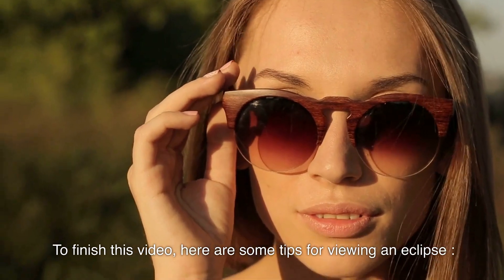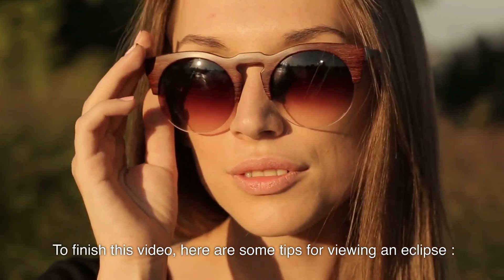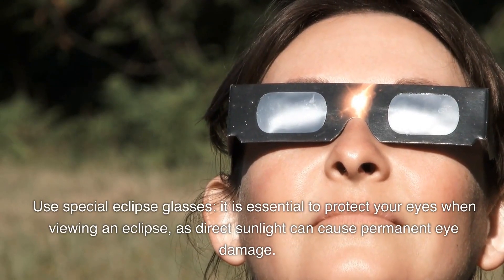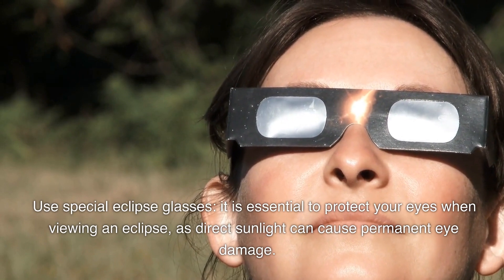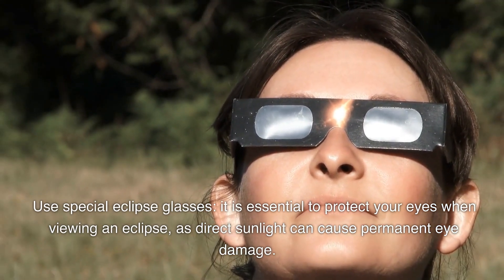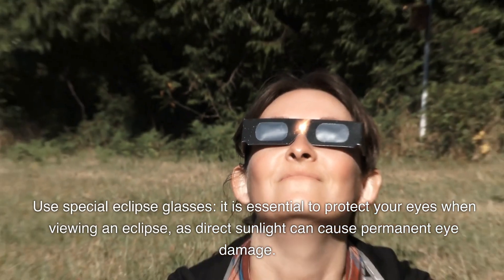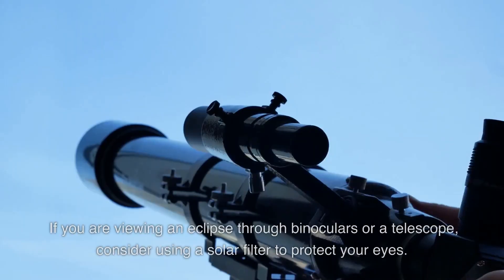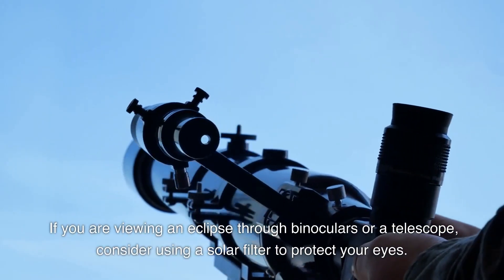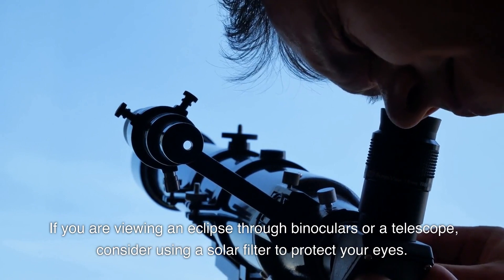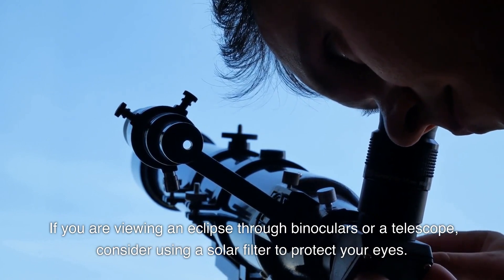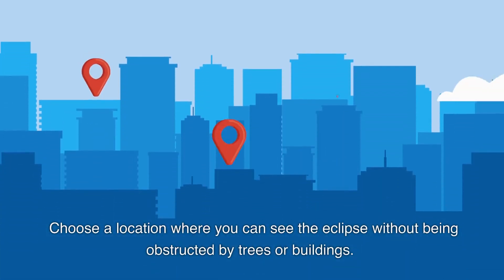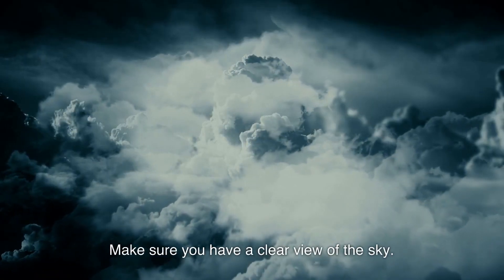To finish this video, here are some tips for viewing an eclipse. Use special eclipse glasses. It is essential to protect your eyes when viewing an eclipse, as direct sunlight can cause permanent eye damage. If you are viewing an eclipse through binoculars or a telescope, consider using a solar filter to protect your eyes. Choose a location where you can see the eclipse without being obstructed by trees or buildings. Make sure you have a clear view of the sky.